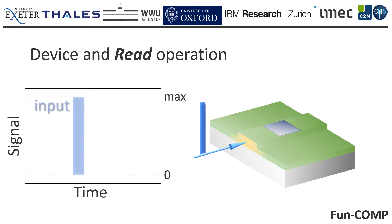A light pulse traveling along the waveguide interacts with the optical cell and a fraction of the delivered optical energy is absorbed depending on the optical cell phase, thus reading information stored in the optical cell.